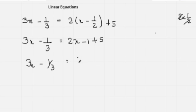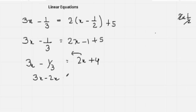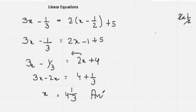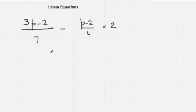So 3x minus 1 over 3 equals 2x plus 4. I bring 2x to the left side and 1 over 3 to the right side: 3x minus 2x equals 4 plus 1 over 3. This gives x equals 4 and 1 over 3. That is our answer.